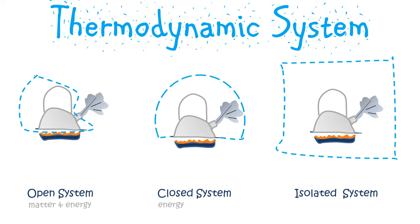The definition of the system depends upon how we define the boundary, and this boundary may be real or imaginary. For example, in this first case, we have drawn the boundary around the kettle — the kettle is an open system because it is exchanging matter and energy with the surroundings, which happen to be the atmosphere and the stove.